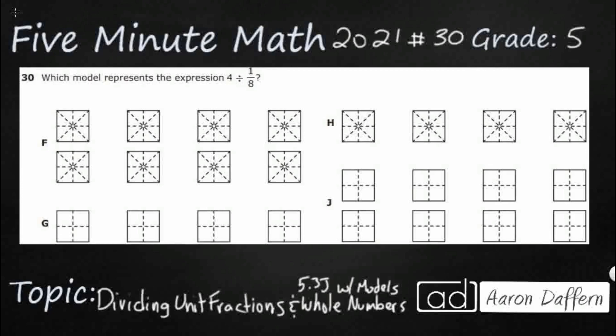We have this expression here, 4 divided by 1/8, and we have to match that to one of these representations. They're kind of all muddled together, so let me see if I can just draw some lines to separate them here. So, we've got F, G, H, and J, and let's just see what each of these represent. Let's start with F.